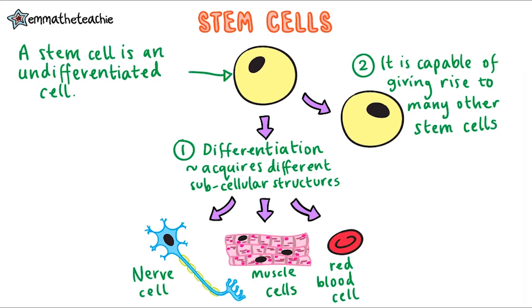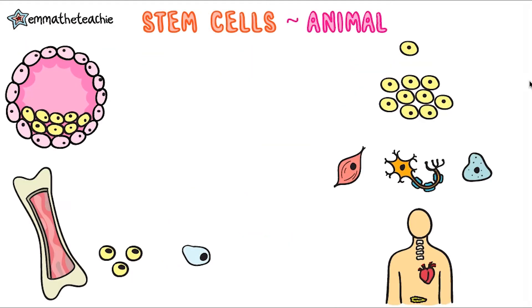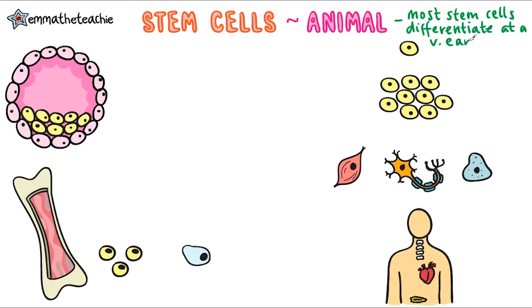We're going to look at the uses of stem cells in animals and plants. Let's start with animals. Most animal stem cells will differentiate at a very early stage, which means that more stem cells can be found in an animal when it is still an embryo. We call these embryonic stem cells.